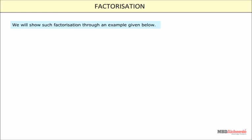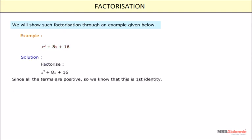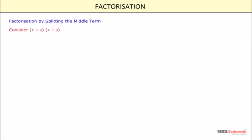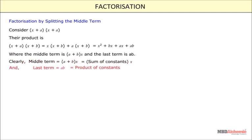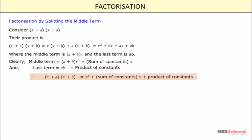We will show such factorization through the example: factorize x square plus 8x plus 16 using algebraic identities. Factorization by splitting the middle term. Consider x plus a into x plus b. Their product is x square plus a plus b into x plus ab, where the middle term coefficient is a plus b and the last term is ab. Clearly, the middle term equals the sum of constants and the last term equals the product of constants.